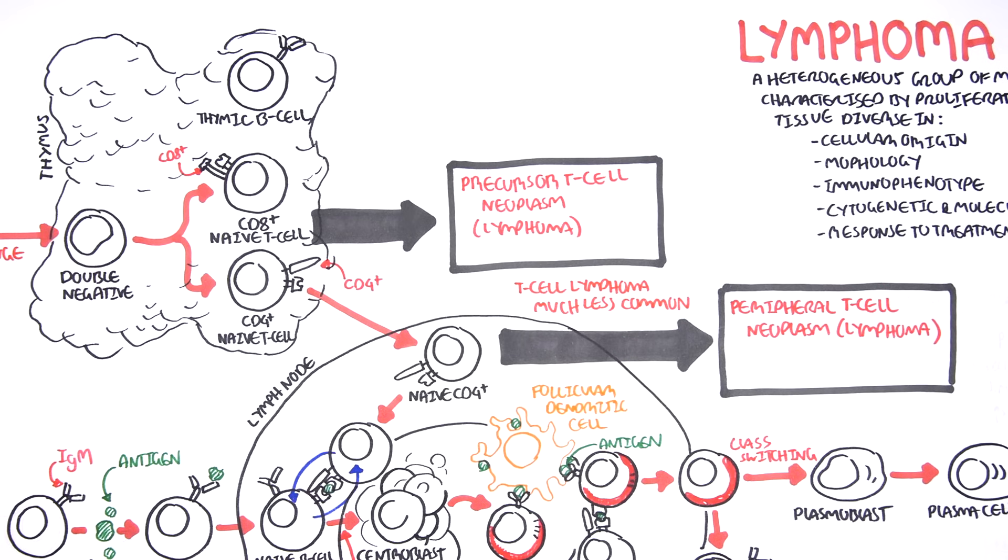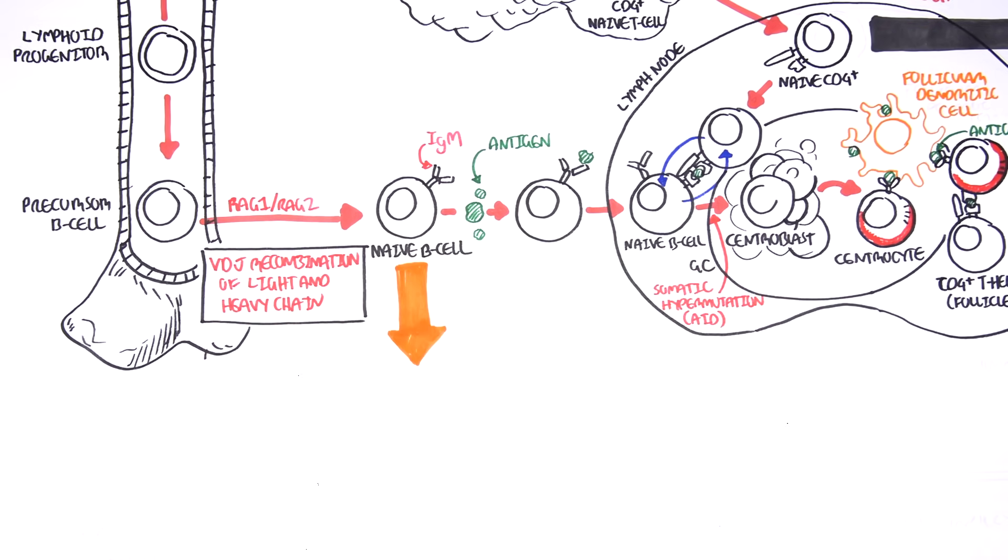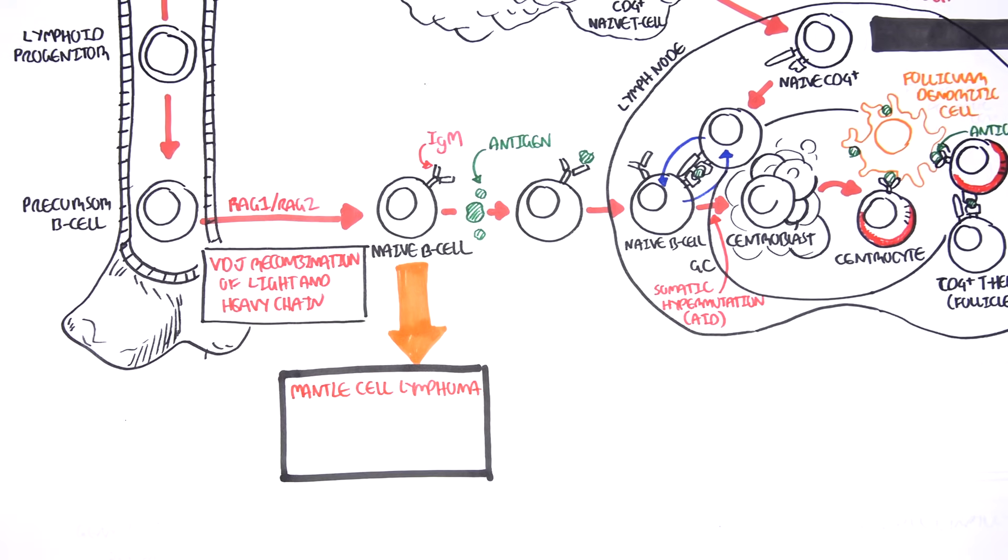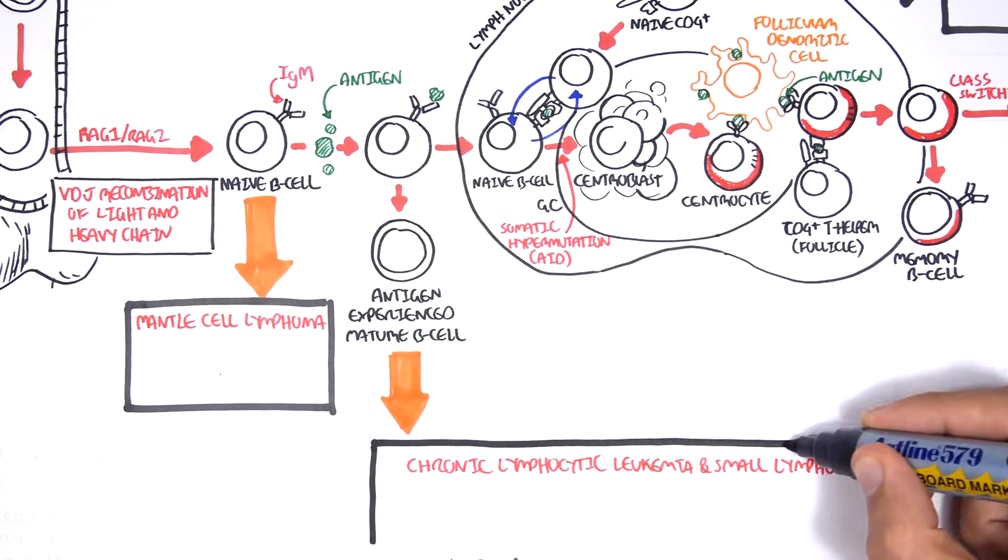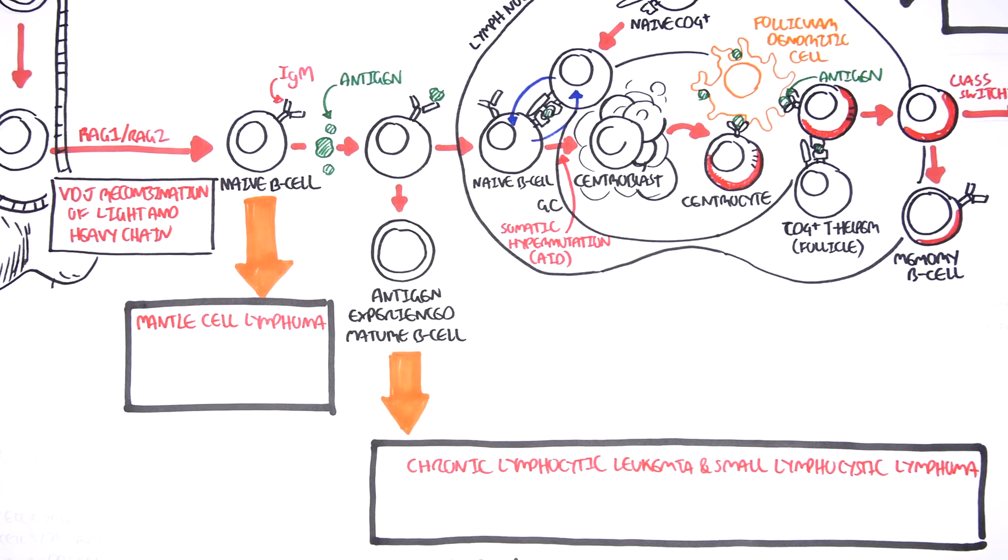Now, let us focus on B-cell lymphomas. We'll go into more detail because the prevalence of B-cell lymphoma is much higher than T-cell. This is because B-cells undergo so many genetic changes during development. Naive B-cells can give rise to mantle cell lymphoma. B-cells that have experienced an antigen encounter can become chronic lymphocytic leukemia or small lymphocytic lymphoma. The main difference is that leukemia involves the blood.